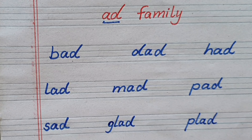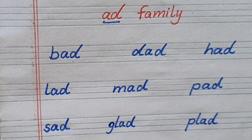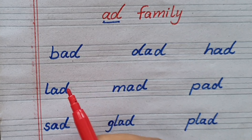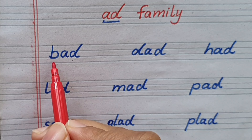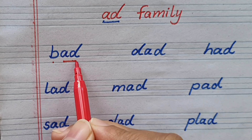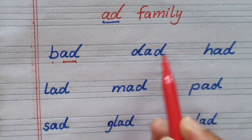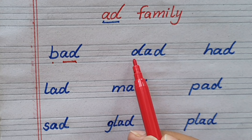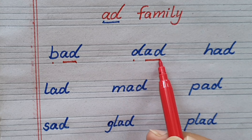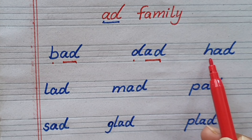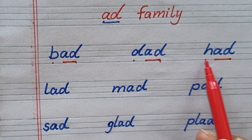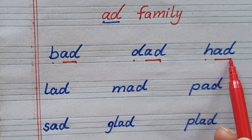Now let's learn again ad family words. B, ad, bad. D, ad, dad. H, ad, had.